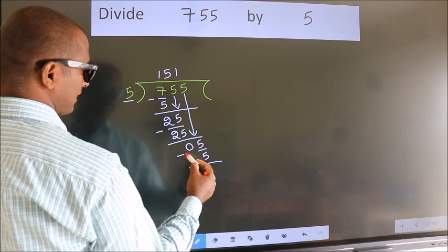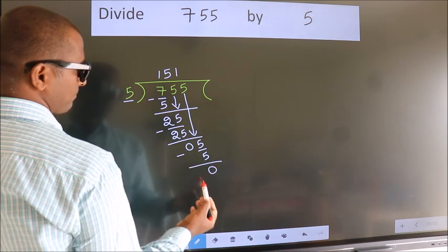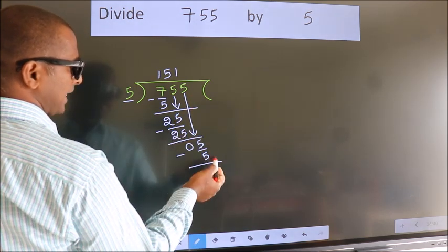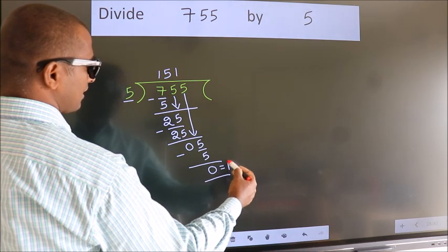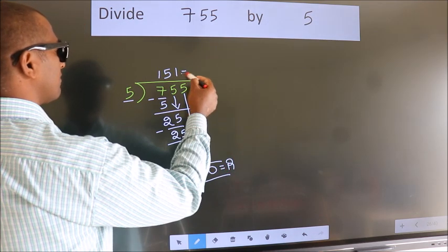Now we subtract, we get 0. No more numbers to bring it down, so we stop here. This is our remainder. This is our quotient.